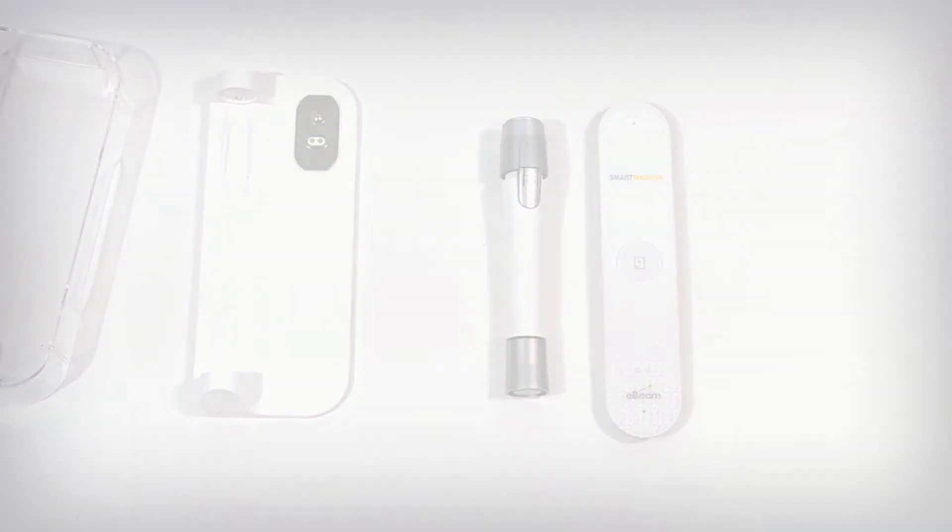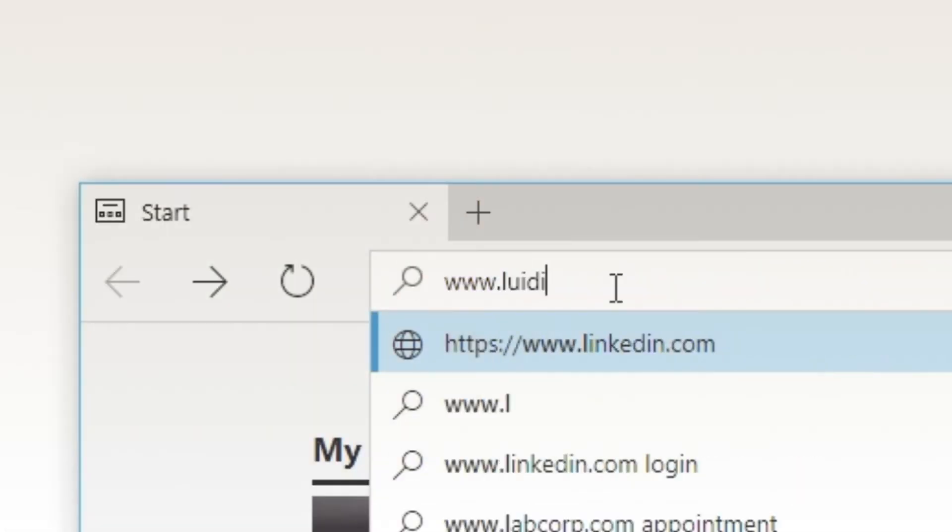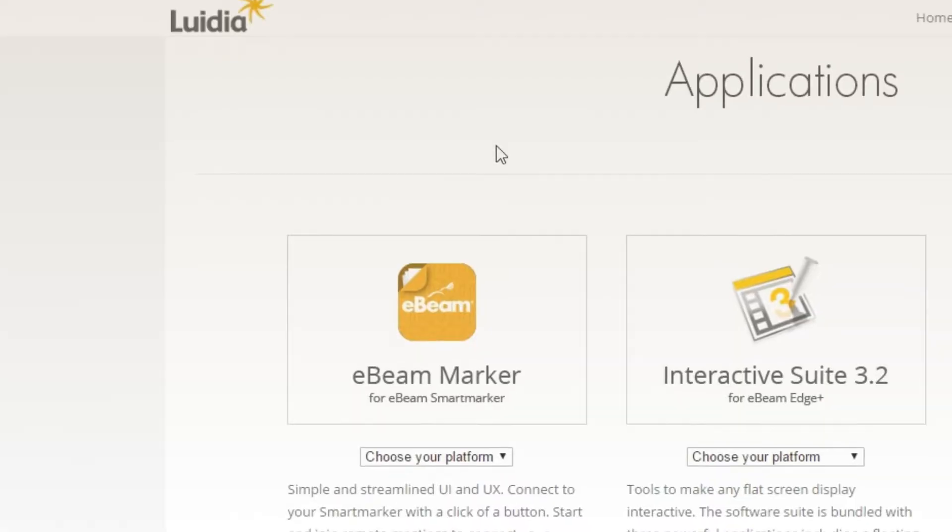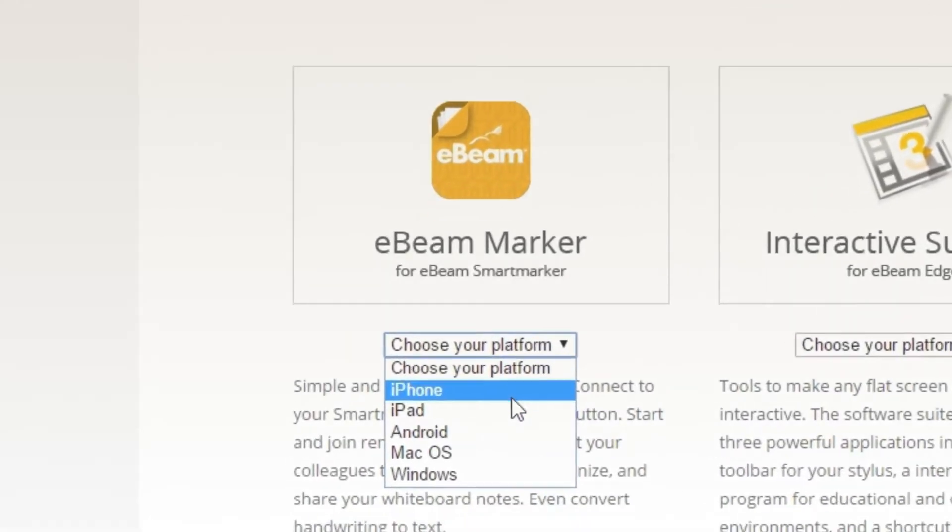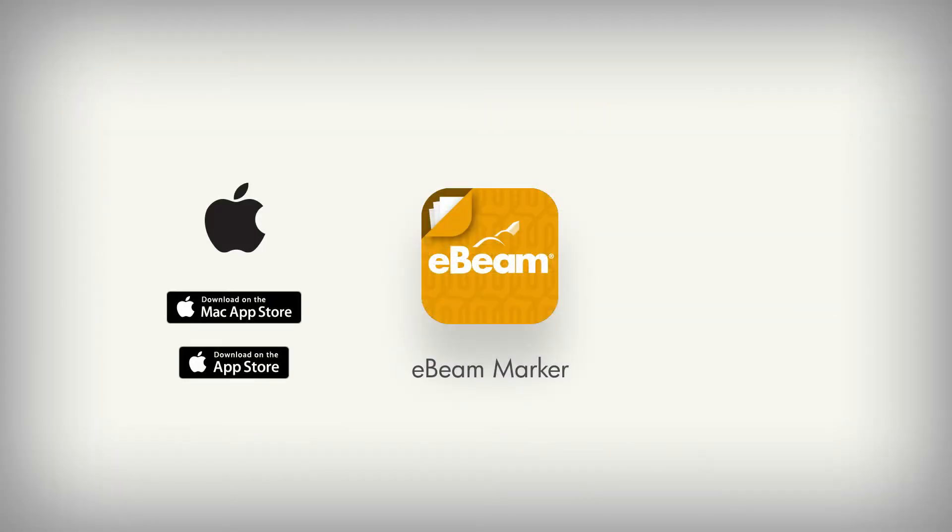To start capturing your notes, download the eBeam Marker app. You can use your SmartMarker on any device, your smartphone, tablet, or any Windows or Mac computer. You can download the app on the Apple Store, the Google Play Store, or from our website.